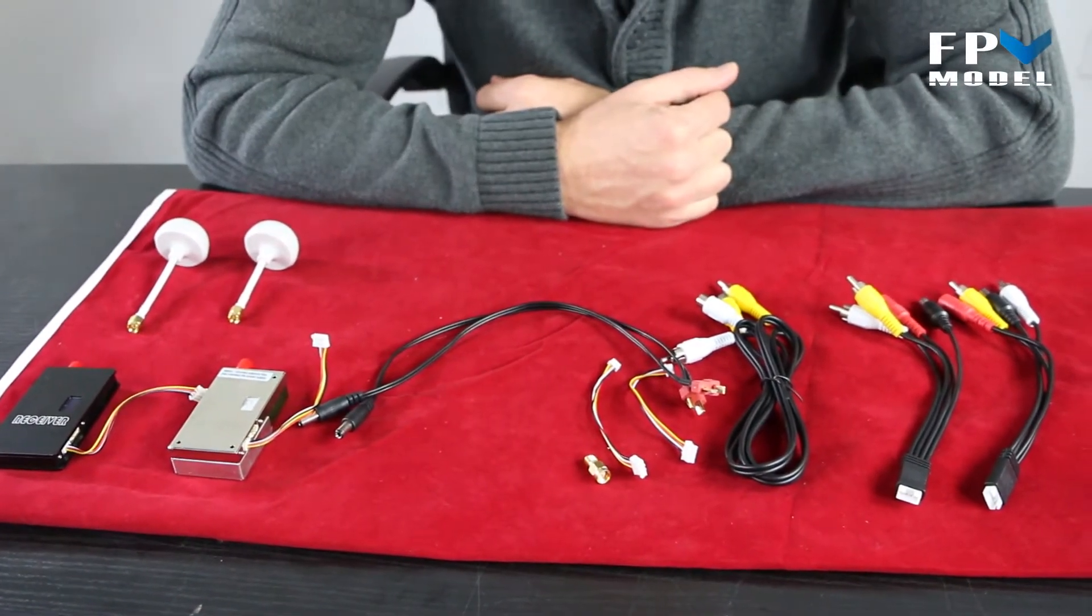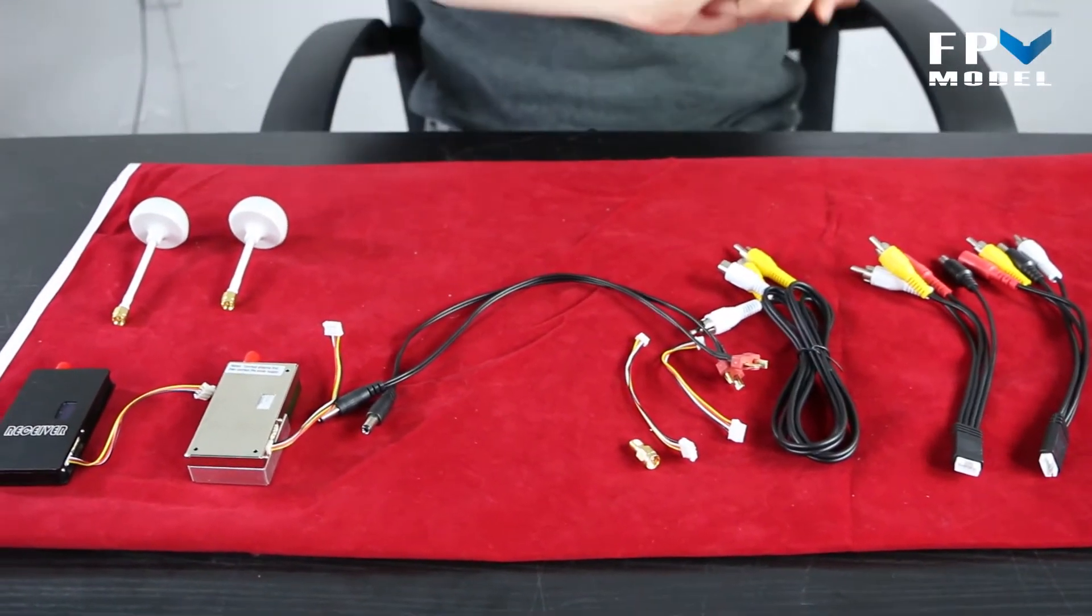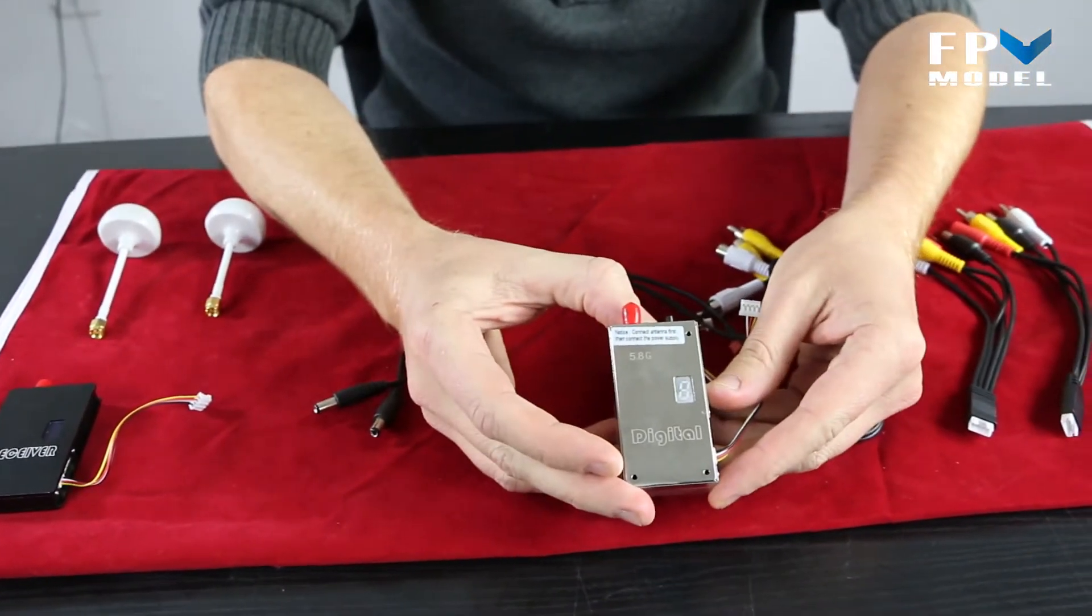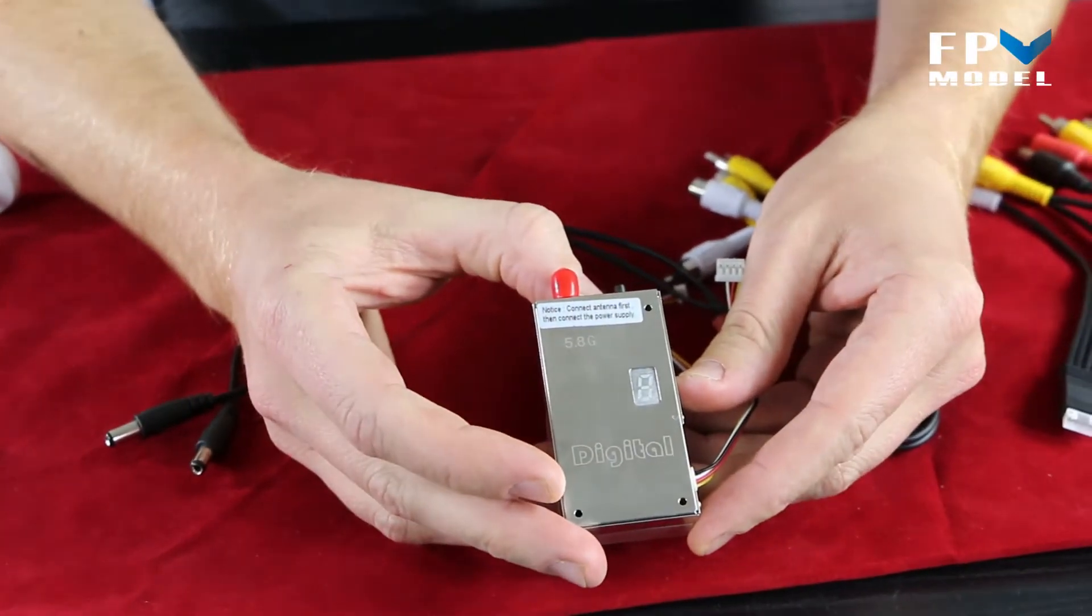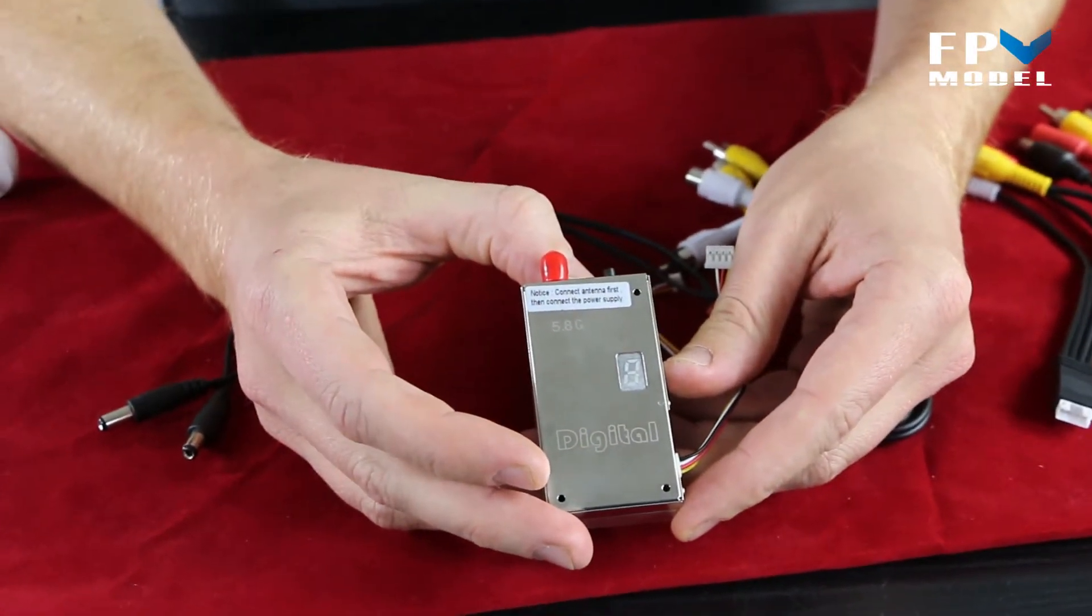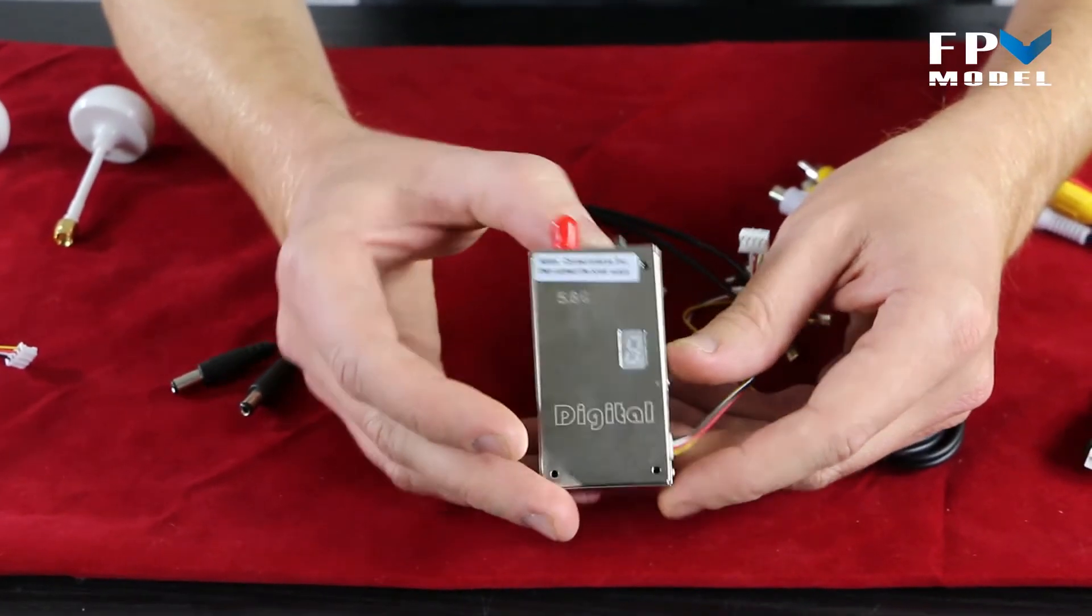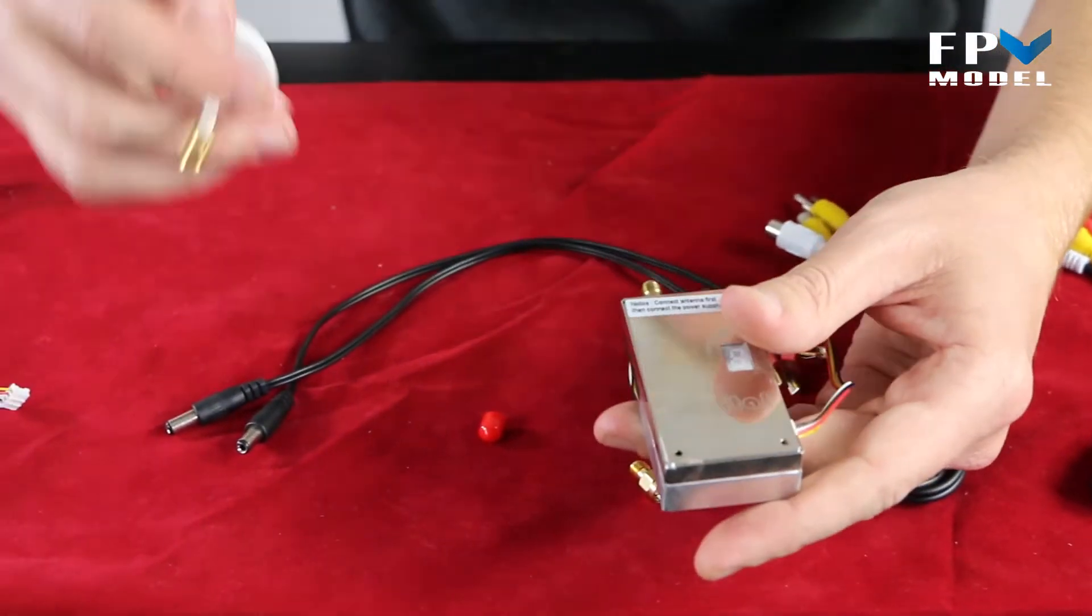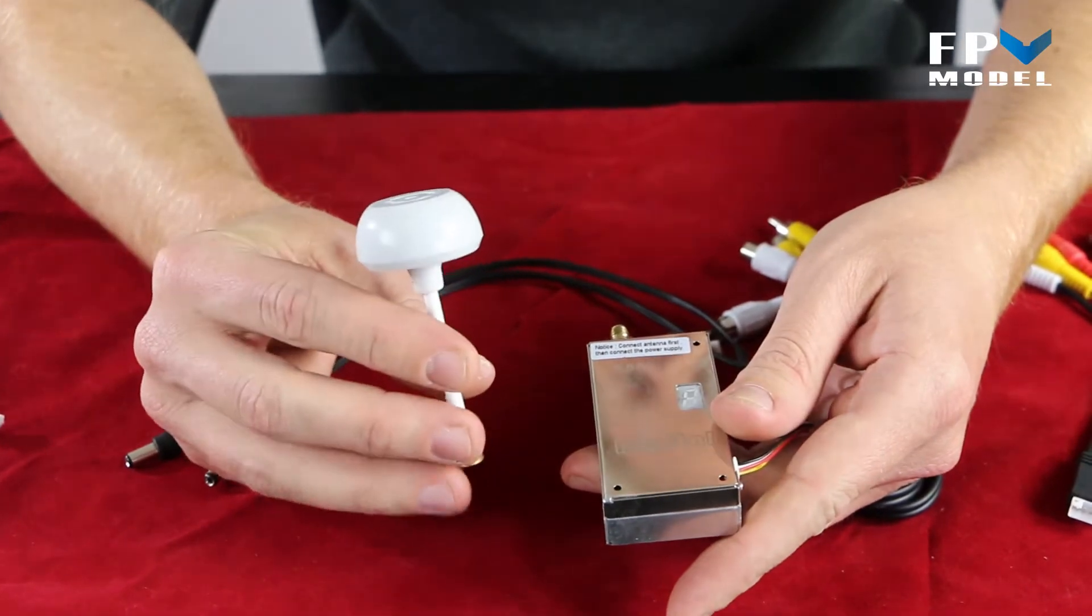So let's get started and show you how to set everything up. First, with the video transmitter, we want to make sure that the antenna is connected. If you power on before connecting the antenna, the transmitter will have the electronics burned inside. So, first things first, before we set anything else up, let's go ahead and connect the video transmitter antenna.